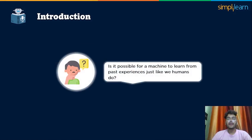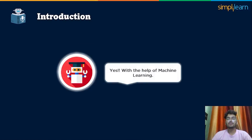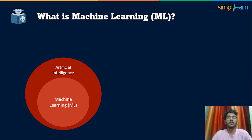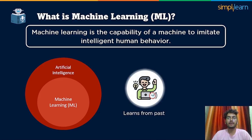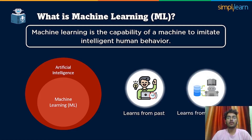So the question arises: is it possible for a machine to learn from past experiences just like we humans do? And the answer to this question is yes. And this became possible just because of machine learning. Machine learning is a sub-part of artificial intelligence, which is broadly defined as the capability of a machine to imitate intelligent human behavior. Like humans learn from their past and acquire knowledge through experience either directly or shared by others, machines acquire knowledge through experience shared in the form of data.